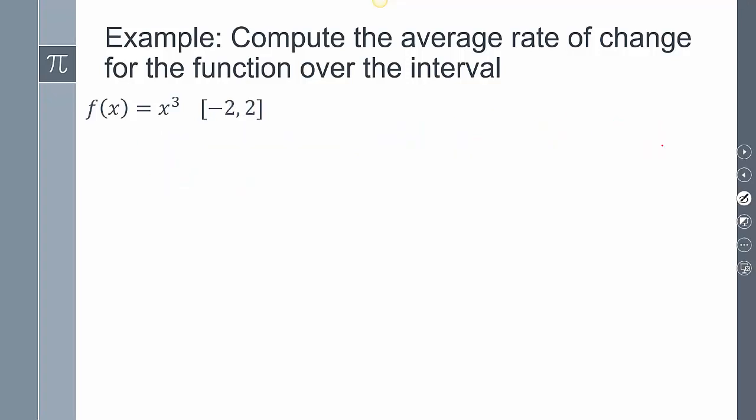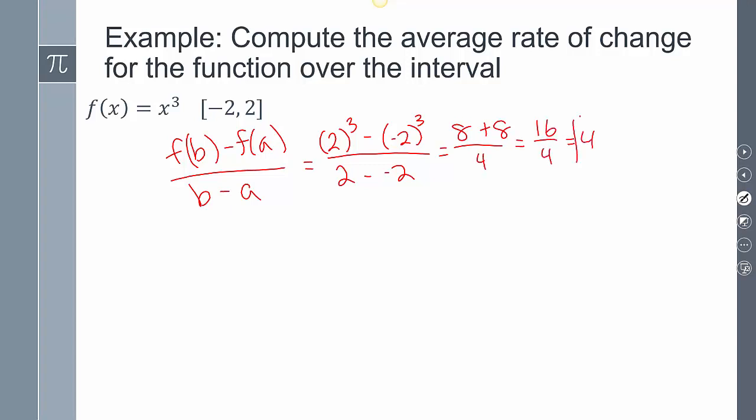For this next one, plugging it in, we said f(b) - f(a) over b - a. Plugging in 2 minus plugging in -2 over 2 minus (-2). I'm going to get (8+8)/4. Adding these together, I get 4. 16/4, which is going to give me 4. That's going to be my answer.